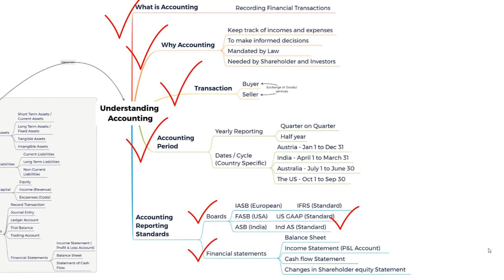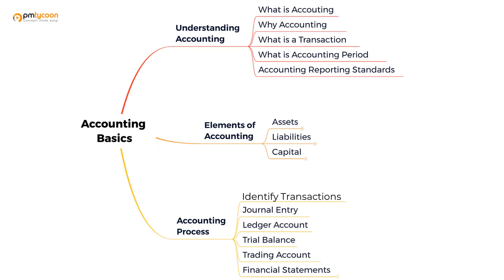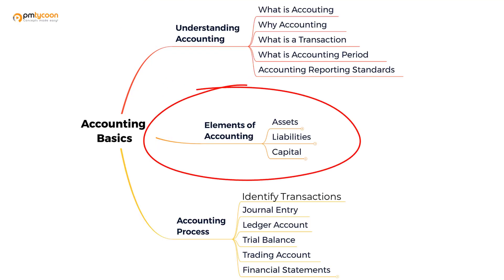Now let's look at the elements of accounting. We are slowly getting into the meat of the subject. In order for anyone to be able to generate the financial statements or have a complete grip of the accounting subject, there are certain basic things that one should be aware of. It is imperative for us to know about the elements of accounting, because once we are clear with these basic terms, it would be easier to cover the accounting process.